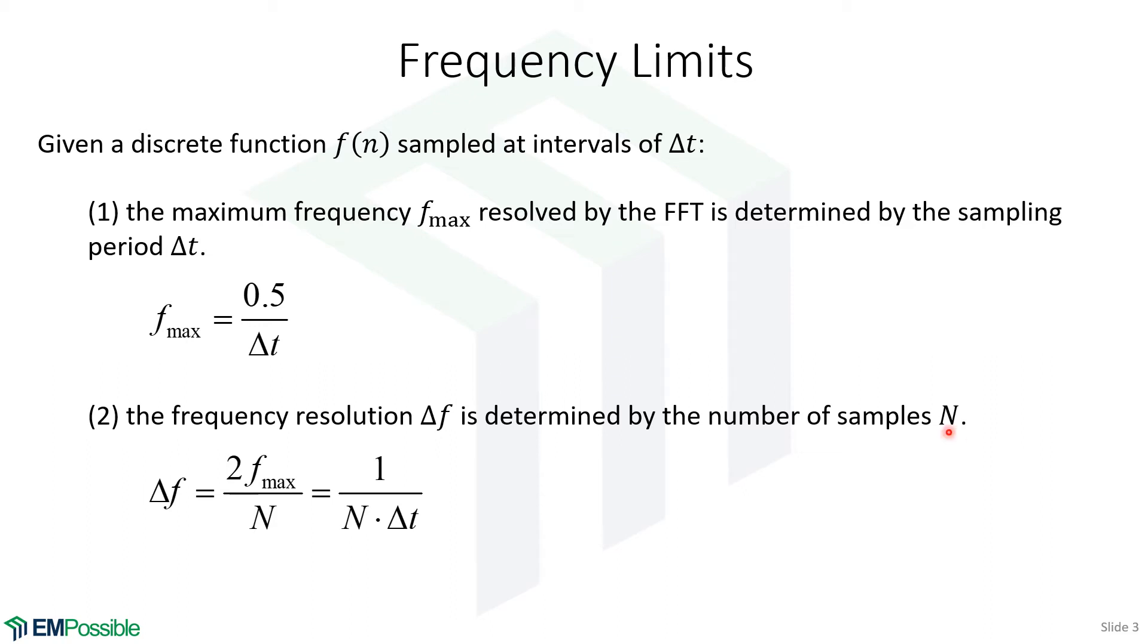The number of samples is really what controls the resolution of our frequency, how closely spaced those points are in frequency. The sampling period is there too, but for the most part, sampling period controls the maximum frequency we can solve, and number of samples controls the resolution or the step size in frequency that we're able to resolve. I'll mention as a note, it is certainly possible to calculate frequencies that are intermediate to these, but it turns out that's not really giving us more information.